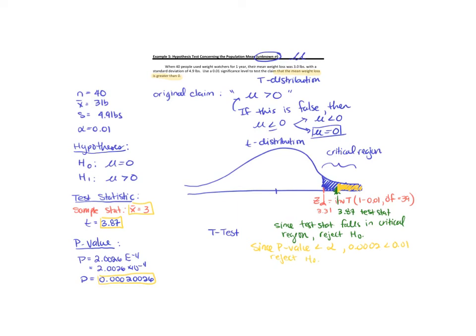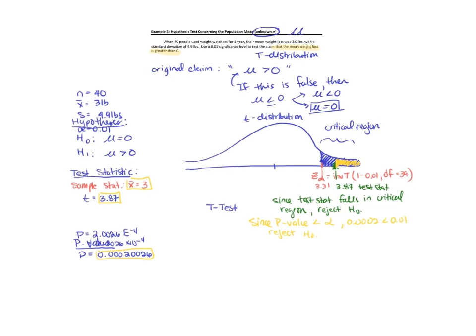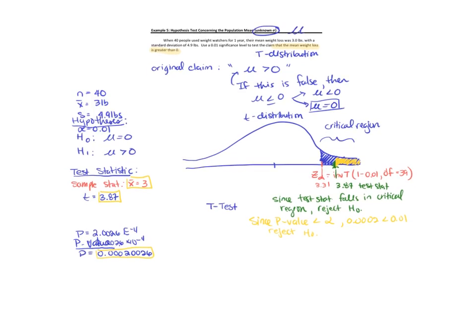Our last step to hypothesis testing is to make sure that we write out the conclusion in a complete sentence. Since we are rejecting the null hypothesis and the original claim is our alternative hypothesis, we would say that there is sufficient evidence to support the claim.